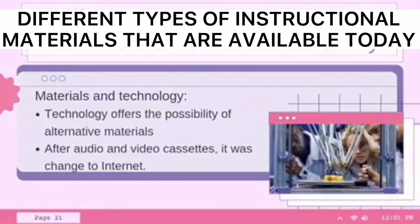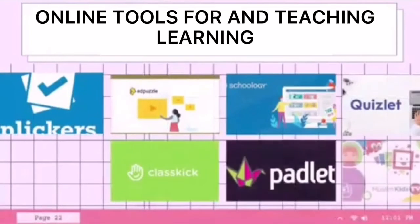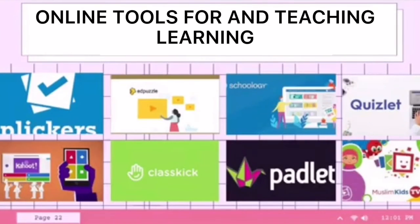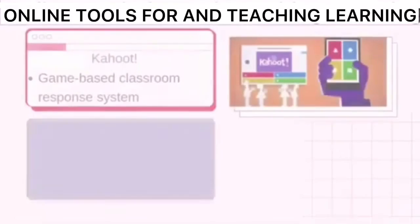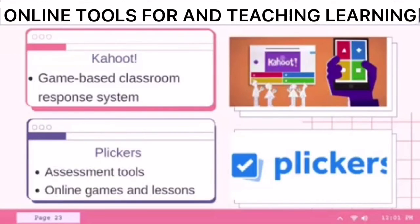We also have different types of instructional materials available today. Under materials and technology, technology offers the possibility of alternative materials and classroom interaction. After audio and video cassettes, the next major technological change was the use of computers and the internet. The internet is bringing further changes, as courses can now be downloaded from all over the world. Proper online tools for teaching and learning include: Clickers, Kahoot, EdPuzzle, ClassKick, Schoology, Padlet, Quizlet, and Muslim Kids TV. Kahoot is a free student response tool for administering quizzes, facilitating discussions, or collecting survey data — it is a game-based classroom response system played by the whole class in real time. Clickers is an assessment tool which allows teachers to collect on-the-spot formative assessment data through online games and lessons.